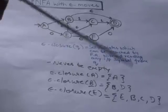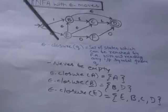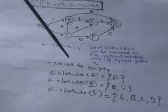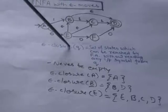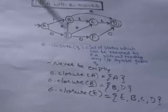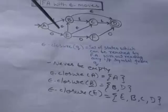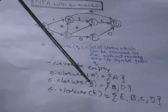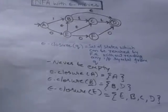So the states the machine can reach from state E without reading any input symbol are E, B, C, and D. First it is E because the machine is already in this state. Then the empty transitions of E go to B and C, meaning the machine can jump to B and C without reading any input symbol. From B the machine can also jump to D without an input symbol. So the empty closure of E is {E, B, C, D}.